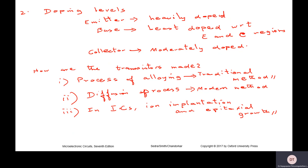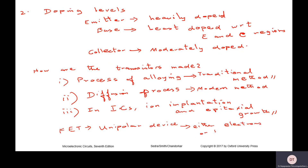That is about the fabrication. I told you that BJT is bipolar junction transistor — both electrons and holes participate. There are other types of transistors like FET — MOSFET — which is a field-effect transistor. Those are unipolar devices. FET is a unipolar device which means either electrons or holes only participate, not both. But bipolar devices such as the BJT have both electrons and holes participating in the determination of electrical characteristics.